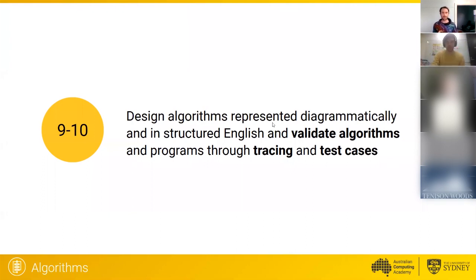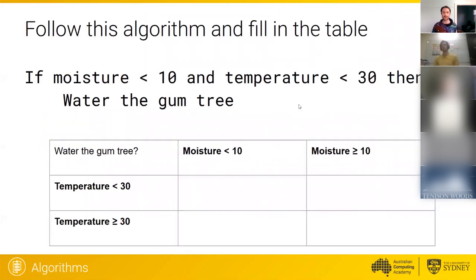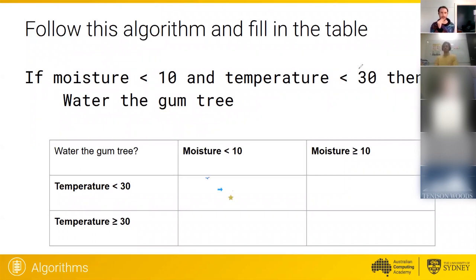For Years 9 and 10, the content doesn't actually change that much. It's the words 'validate algorithm through tracing and test cases.' What we're looking for in Years 9 and 10 is really testing it properly and making sure students understand edge cases. The complexity increases, but the actual things they do doesn't change that much — we did just trace through the algorithm and we used a test case to check, which is exactly what we did in the last exercise. Could you all get a stamp out again? The task is to stamp inside the box where the condition of watering the gum tree is true.